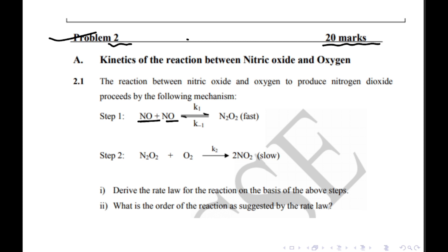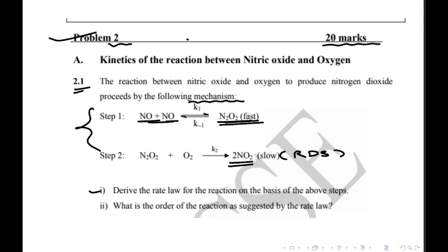This question involves a reaction between nitric oxide and oxygen to produce nitrogen dioxide. The particular mechanism by which this reaction happens has been given to us — it proceeds in two steps. The first step involves two NO molecules which dimerize, and further this N₂O₂ reacts with oxygen to produce NO₂, which is the RDS, that is the slow step of the reaction. The question asks us to find the rate law and the order of the reaction.